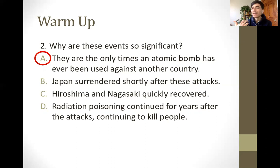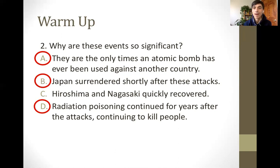As we think about that danger, we study what happened the only other time atomic bombs were used. Japan surrendered shortly after these attacks — the bombings were on August 6th and August 9th, and then on August 10th Japan formally surrendered, so they were definitely involved in ending the war in the Pacific. Additionally, when you use an atomic bomb, radiation poisoning continues for years, causing cancer and illness — that's what makes atomic bombs different from regular bombs: the long-term consequences.